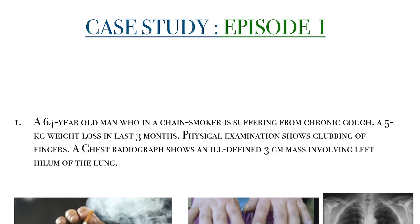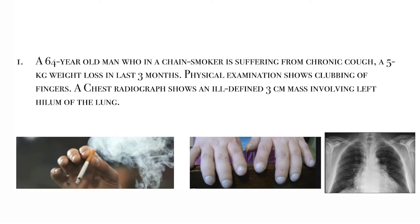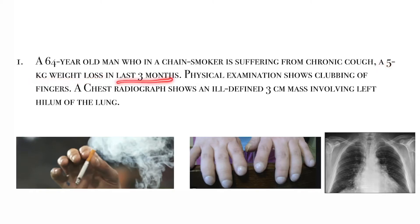Hello friends, today we are going to discuss a case study, and this is the first episode of the case study series. Today the discussion is about tuberculosis. Let's read the question first. Here, a 64-year-old man who is a chain smoker is suffering from chronic cough and a 5 kg weight loss in the last three months.